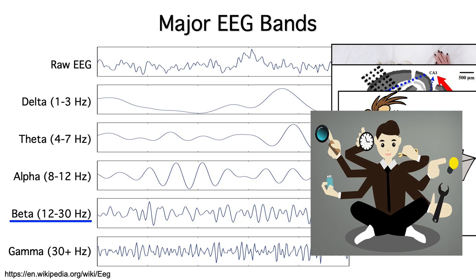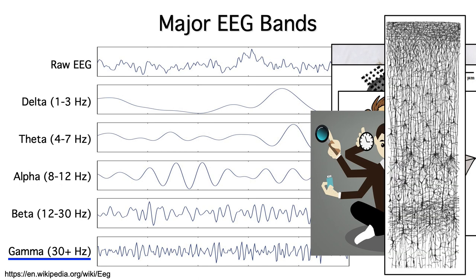At the upper end, we see gamma band oscillations. They occur so rapidly that they presumably reflect short-range feedback loops within a cortical column. Gamma band oscillations tend to be quite small, and they can be difficult to distinguish from muscle artifacts in scalp recordings.